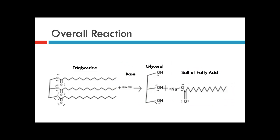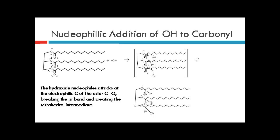How exactly does this happen, though? We shall see in the multi-step mechanism. In the first step, the hydroxide nucleophile attacks the electrophilic carbon of the ester, which is the carbon double bonded to the oxygen. This breaks the pi bond and creates the tetrahedral intermediate.